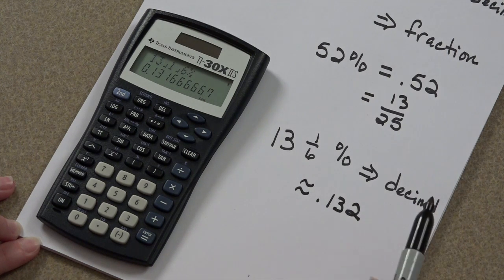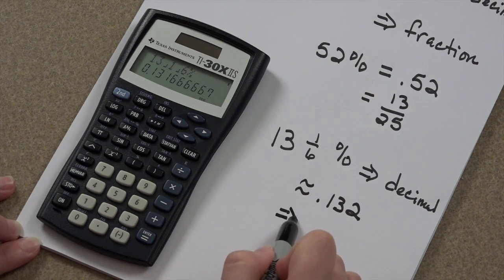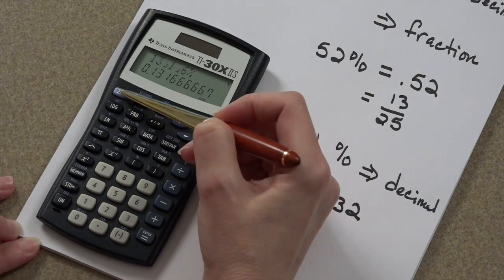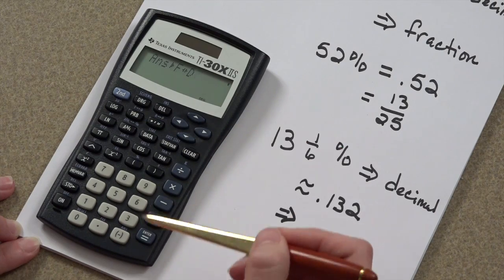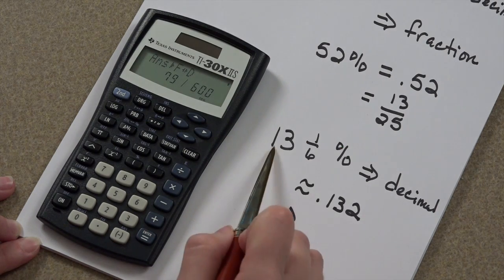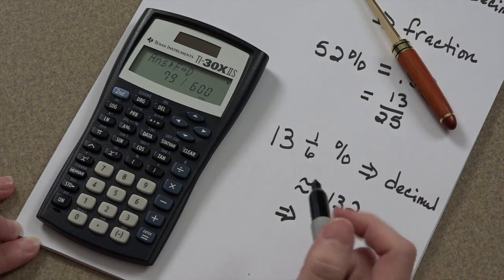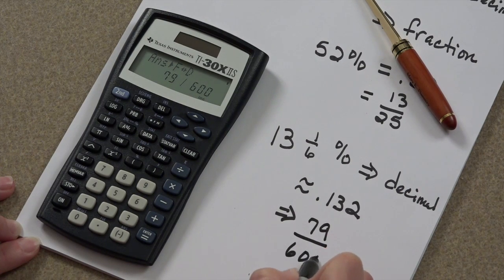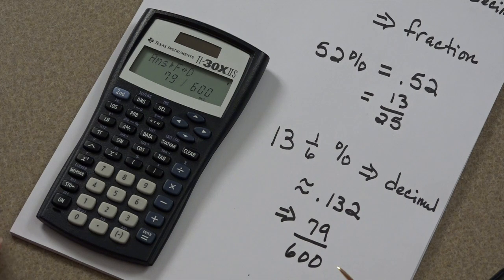You can also change this to its actual fraction equivalent. Pressing the second button and the F to D command. 13 and 1 sixth percent is the same exact value of 79 over 600.